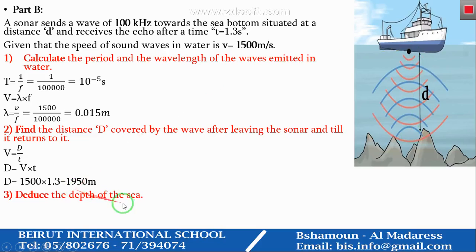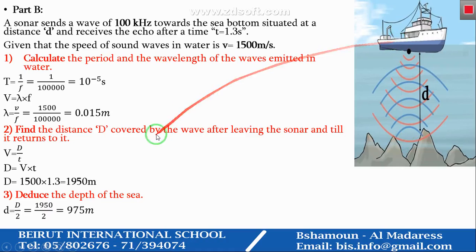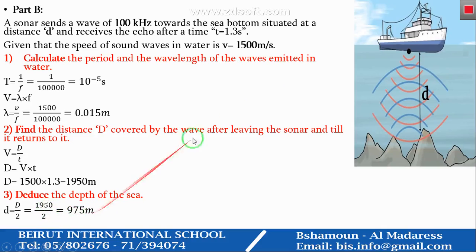Finally, deduce the depth of the sea. To find the depth of the sea, it is half the distance D calculated in part 2, since the depth is only the distance of the downward or upward transition. So the depth d = D divided by 2 = 1,950 divided by 2 = 975 meters.